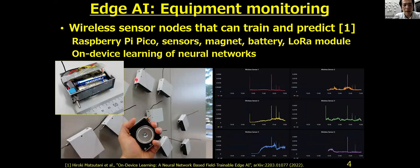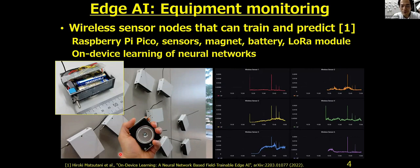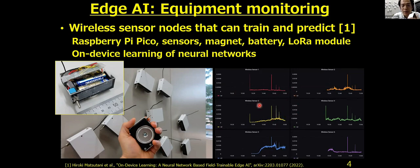This is another demo that uses wireless sensor nodes that can train and predict at a deployed environment. The sensor nodes consist of Raspberry Pi Pico, sensors, magnet, battery, and wireless modules. They can be attached to the target object using a magnet. Anomaly detection results of the sensor nodes are transmitted wirelessly, and the server receives and visualizes the results.